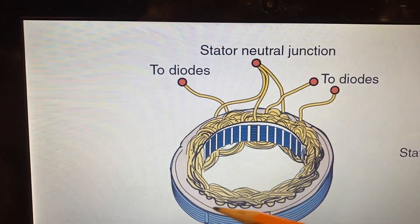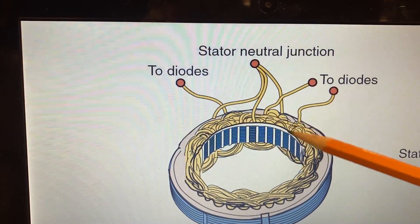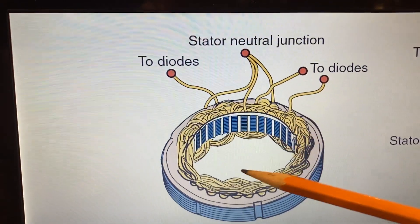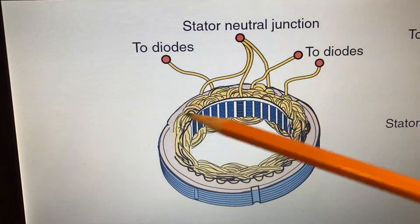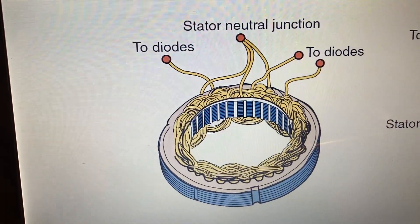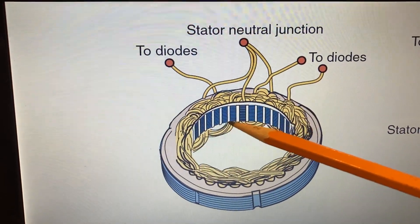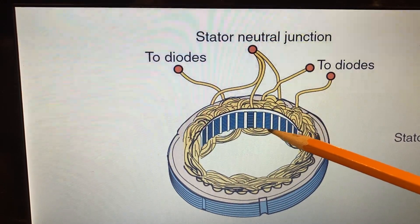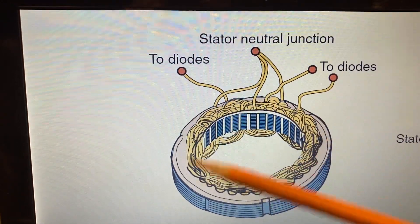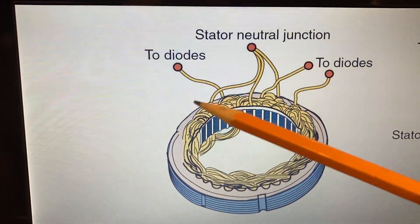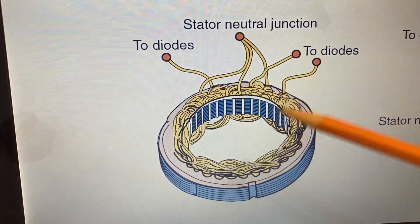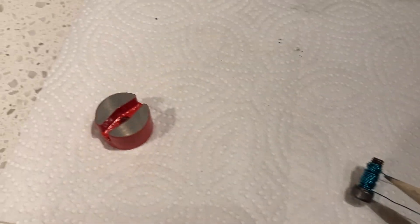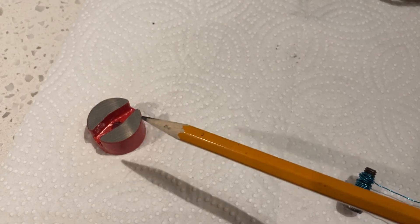The whole goal is to get magnetic flux to cut across a conductor and induce a voltage into the windings. This is what the stator actually looks like in reality.